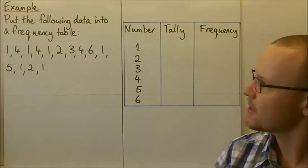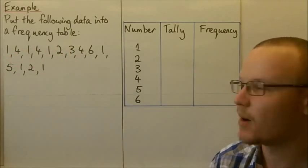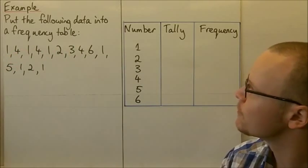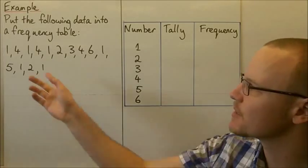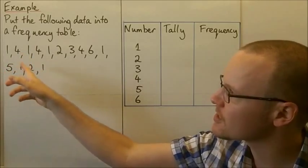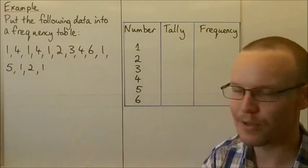Here we've got an example. Put the following data into a frequency table. These might be the number of siblings in a household or something like that. We survey the first person says one, the second person says four, the first person says one, then four, then one, then two, et cetera, until we get all of this data.